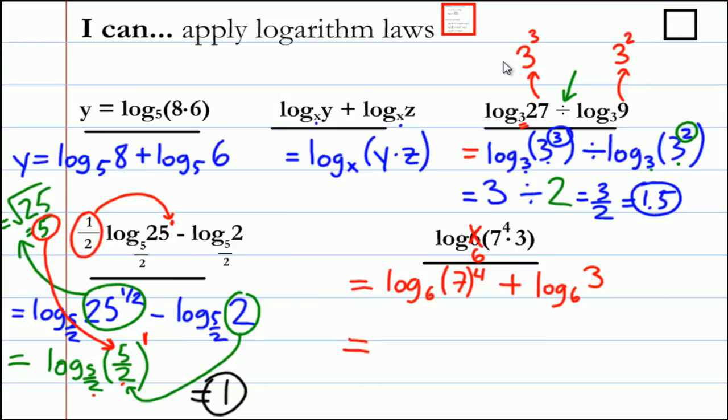Finally, this isn't quite where we would like it yet. We want to get it all in the same line. Use the power law to get it looking like this: 4 log base 6 of 7 plus log base 6 of 3.